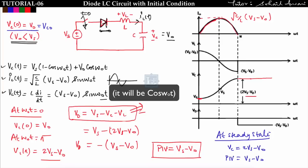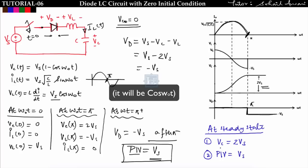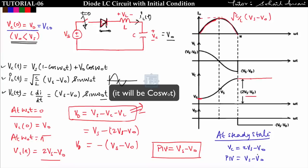Key difference from Case 1: with initial condition V₀, both the steady-state capacitor voltage and PIV are reduced by V₀. Steady-state vc = 2Vs - V₀ and PIV = Vs - V₀. Also, at t = 0, the initial capacitor voltage is non-zero (= V₀), unlike the zero initial condition case.